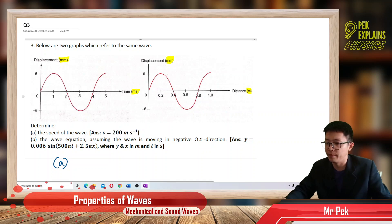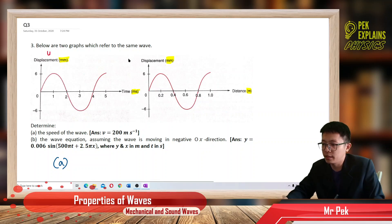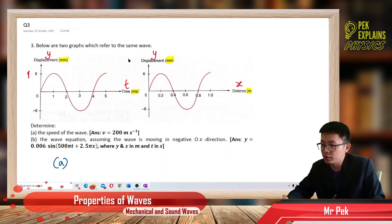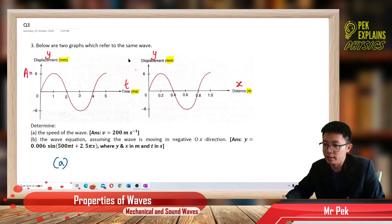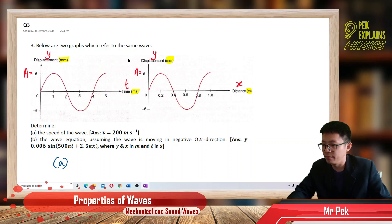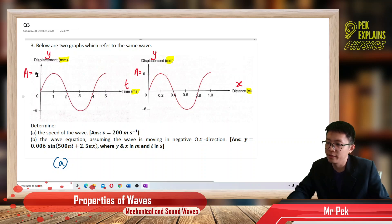This is the displacement versus time graph. This is the displacement versus distance graph. For both graphs, you can find the amplitude. So this is actually the amplitude. The amplitude is six — but what's the unit? Millimeter. That's why I asked you to check the unit.